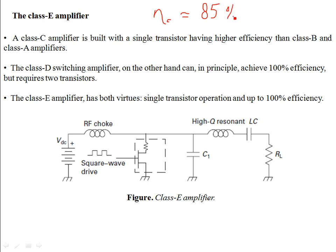In Class D and Class E amplifiers, you can reach efficiencies of — for example, in Class D and Class E — a theoretical efficiency of 100%. Class D and Class E have very similar efficiencies, better than Class C amplifiers. They are used in applications like industrial heating, curing of fiberglass, and in applications where you need to save electricity — even on a small scale, like cellular transmitters in mobile phones.